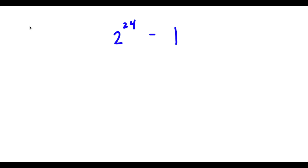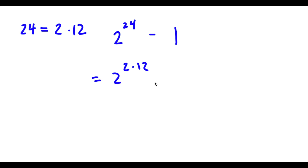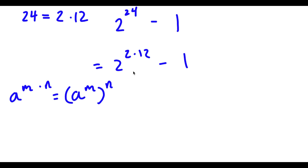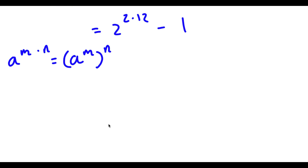Now 24 here is the same thing as 2 times 12, so I'm going to rewrite 24 as 2 times 12. Now if I have something in the form a to the power of m times n, this can be written as a to the power of m to the power of n. So 2 to the power of 2 times 12 becomes 2 to the power of 12 to the power of 2.